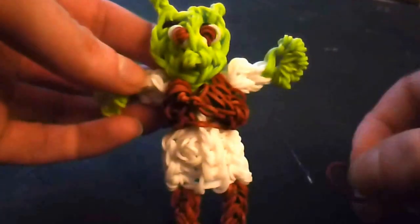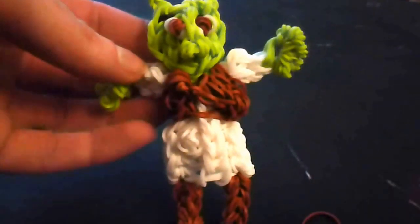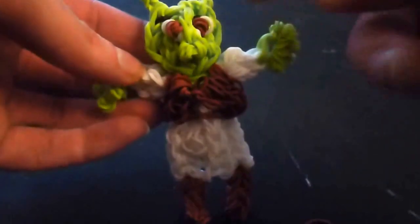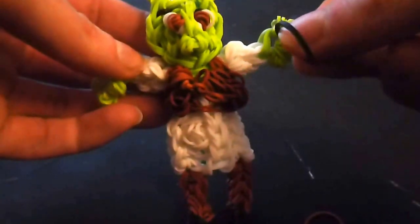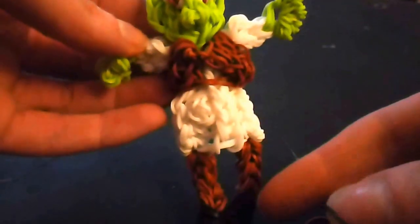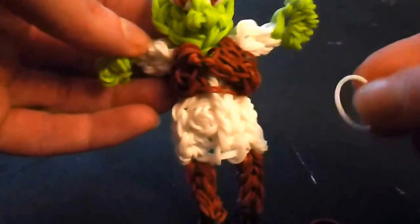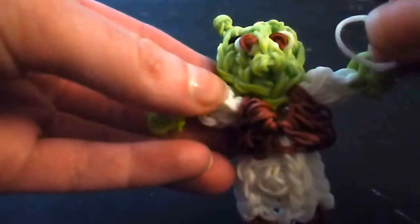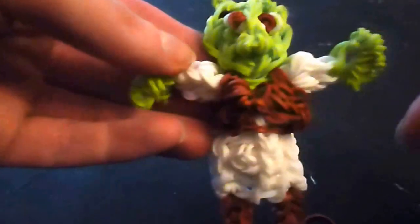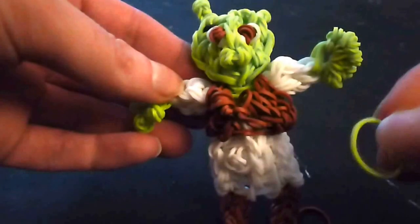You're gonna need brown for the vest, shoes, leggings, and eyes. You'll need black bands for the eyebrows and boots. You'll be needing white bands, a lot of white bands for the main outfit and eyes, and you'll be needing quite a bit of green as well. This will be the body color or the skin tone.